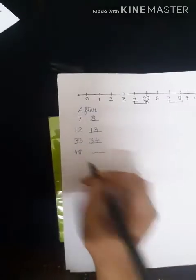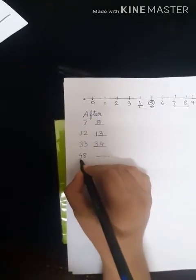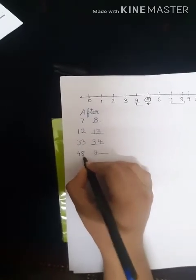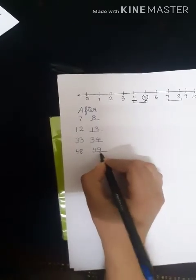Let us look at the next number, 48. So here 4 is going to be 4. And what number comes after 8? 9. So what will the number be now? 49.